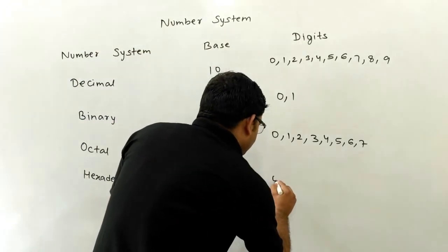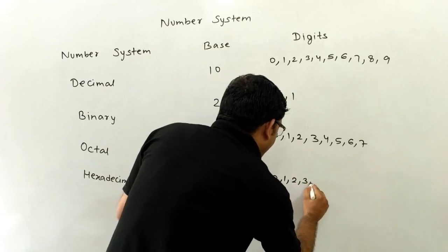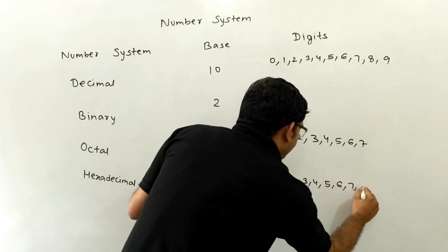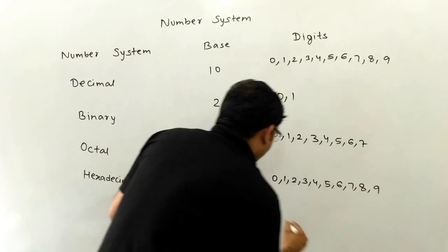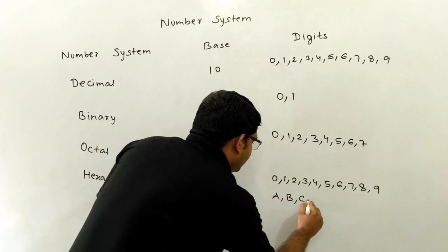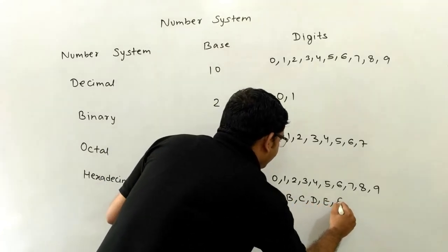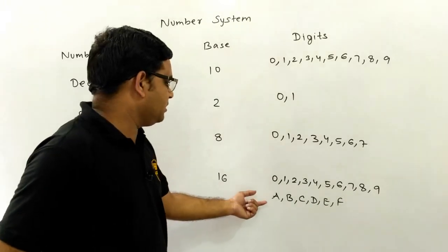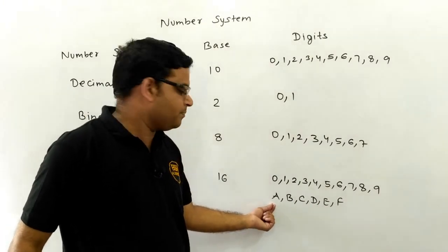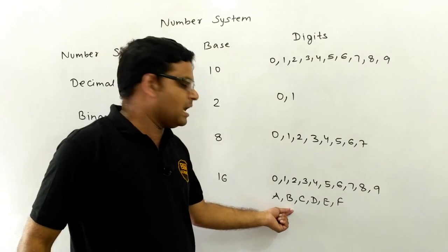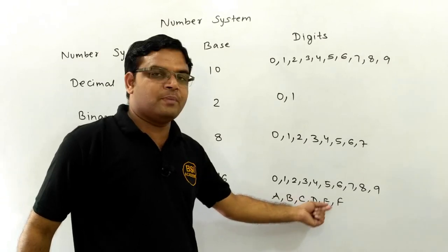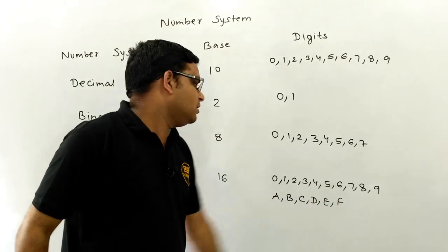So the hexadecimal digits are 0, 1, 2, 3, 4, 5, 6, 7, 8, 9, A, B, C, D, E, and F. A represents 10, B represents 11, C represents 12, D represents 13, E represents 14, and F represents 15.